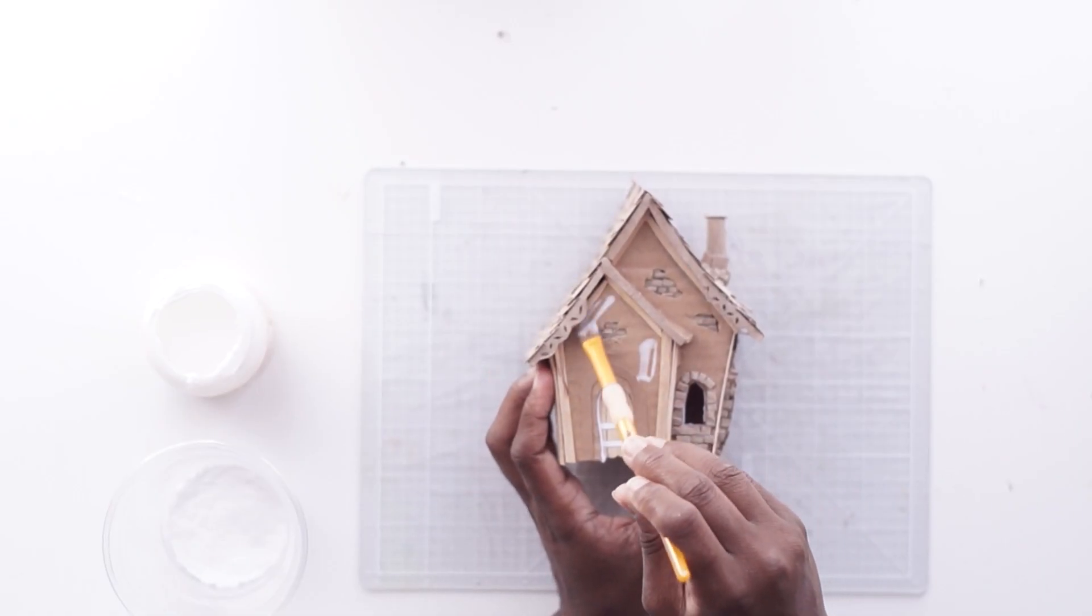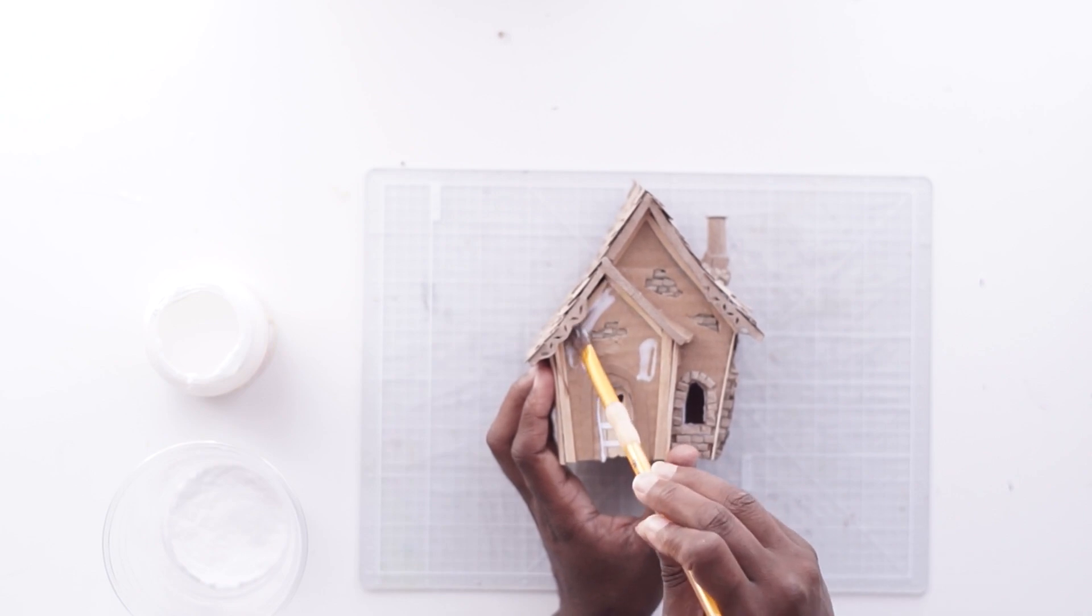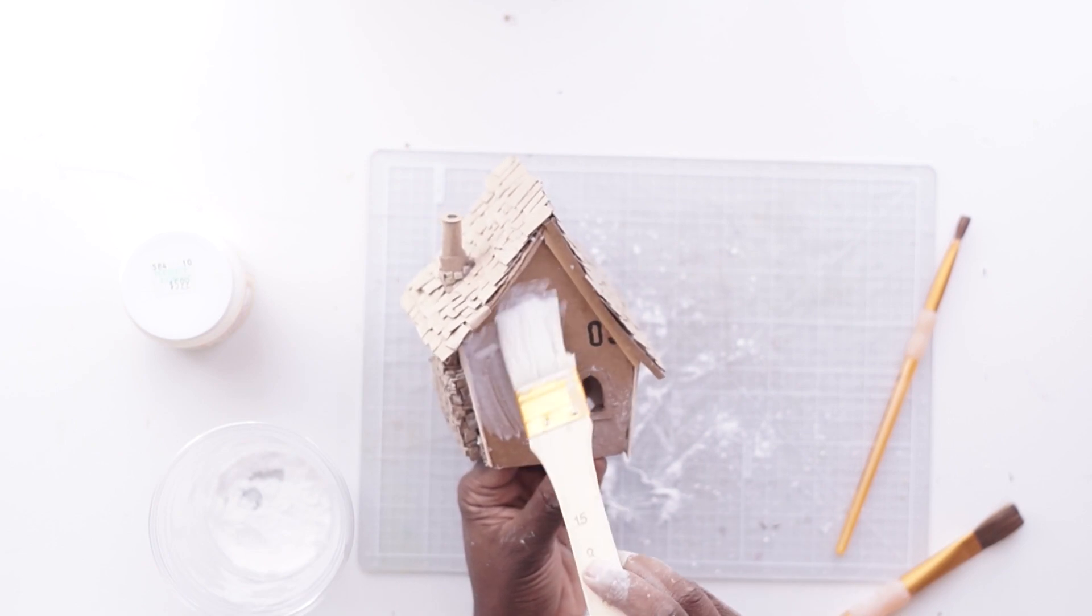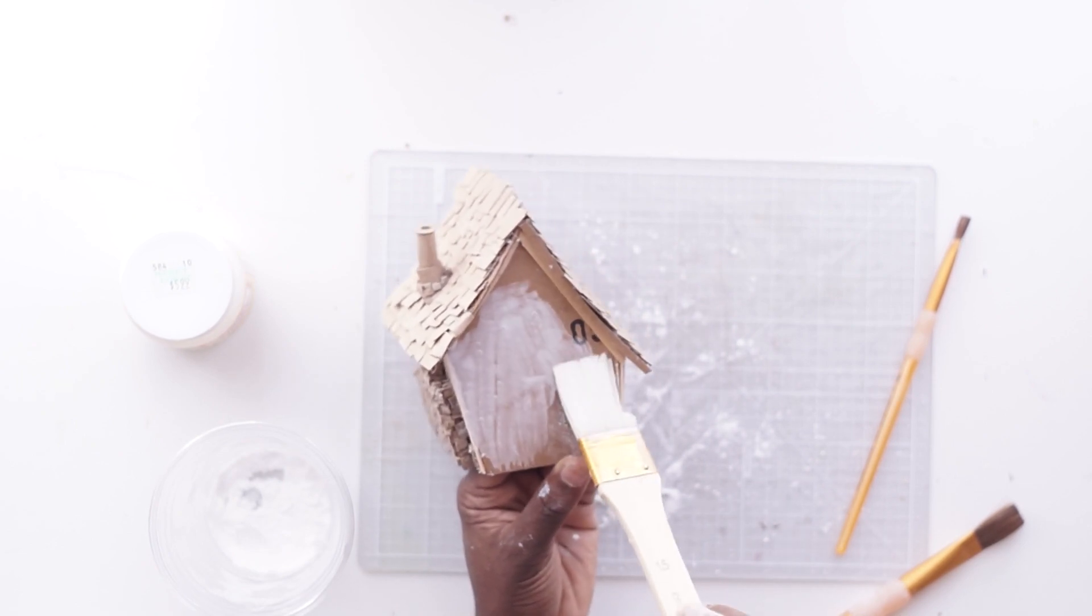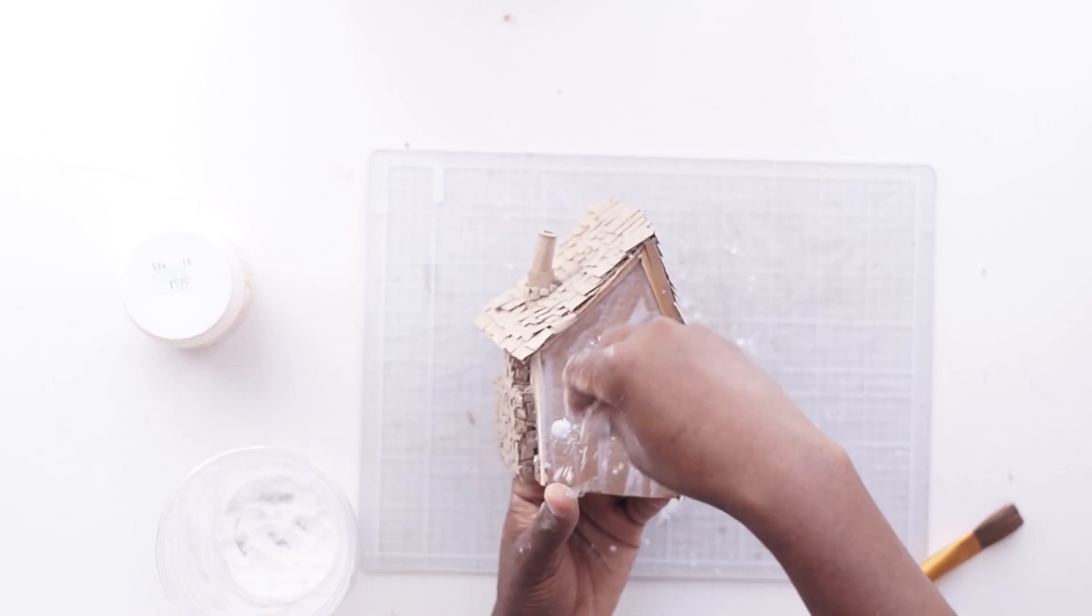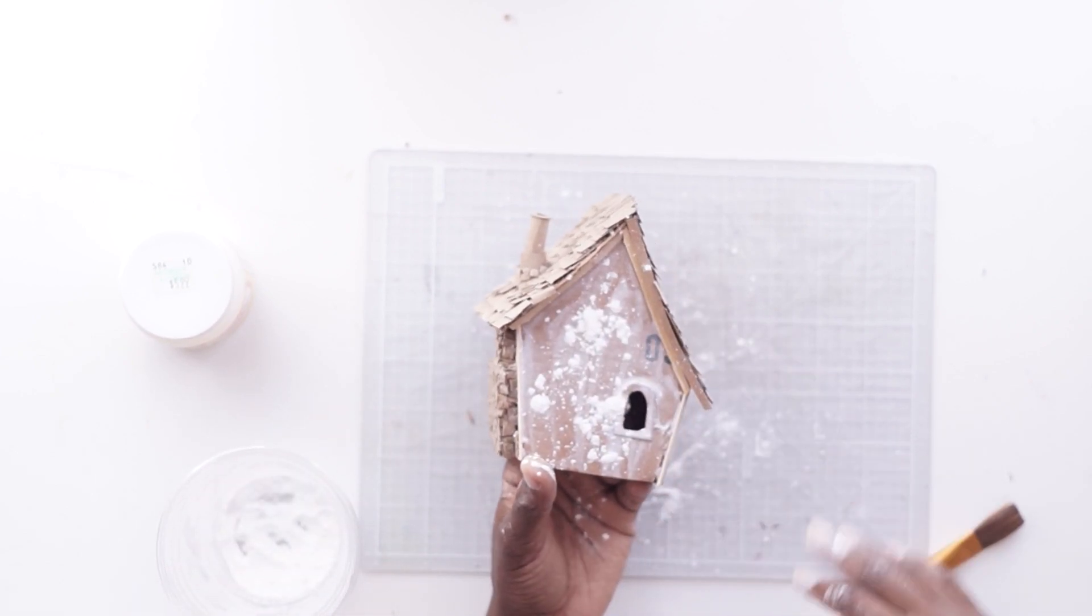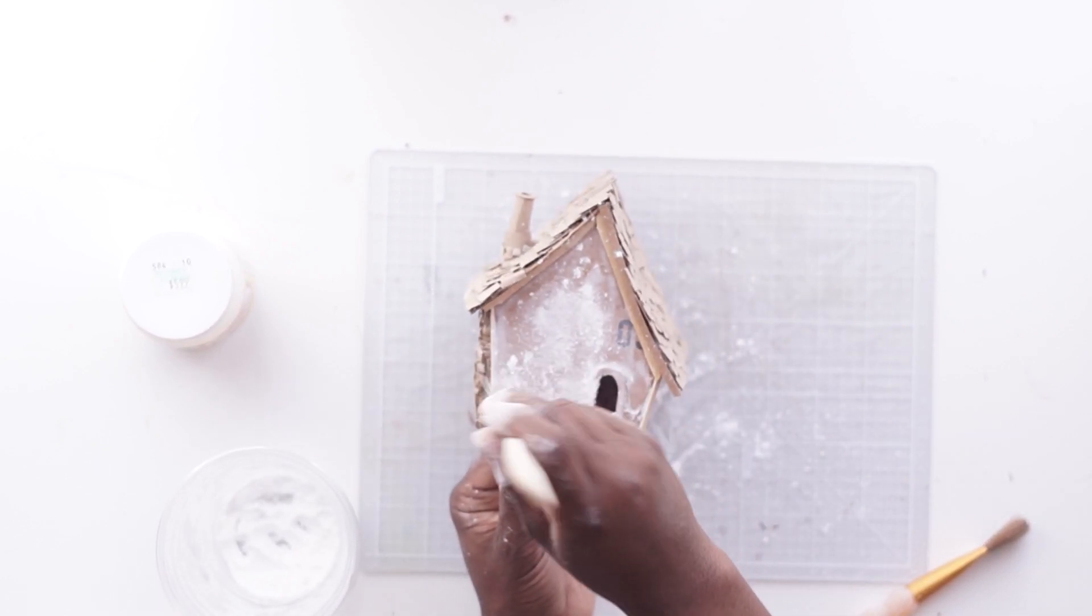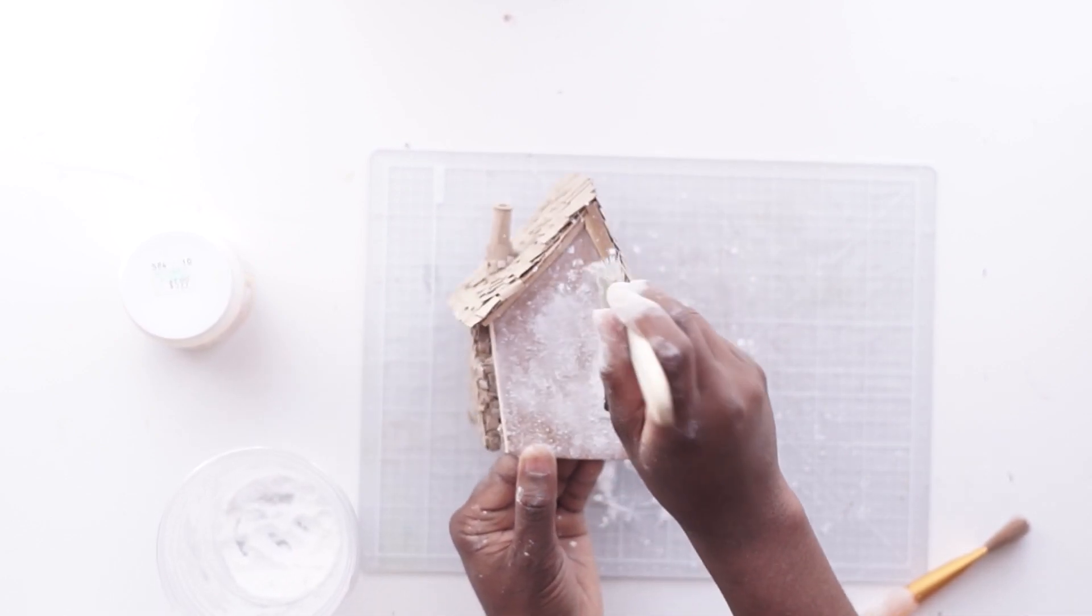So my solution was to use Mod Podge and white glue to form sort of a waterproof barrier over the whole thing. And then I thought, oh, I'll go ahead and add texture to this by adding in some baking soda, which I've used this mixture to create texture before and create mud and dirt, except this wasn't baking soda. It was baking powder.